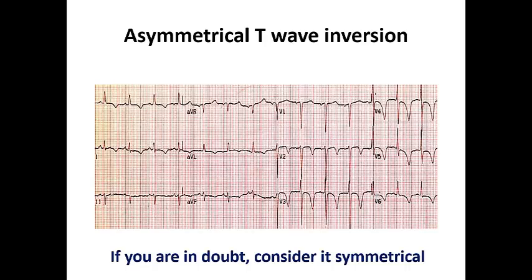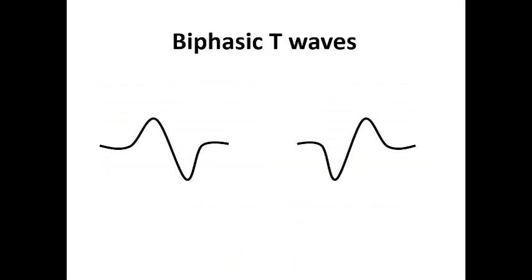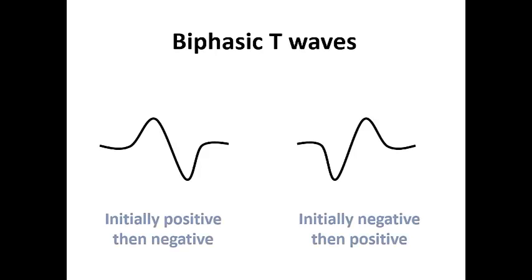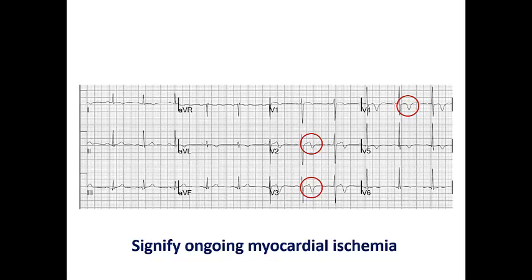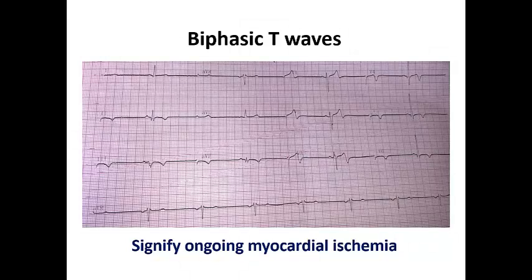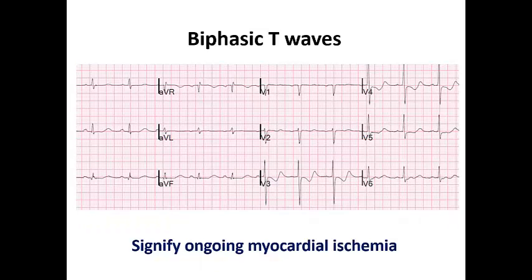The biphasic T-wave has two morphological variants: either starting positive then turning negative, or starting negative then turning positive — both are considered biphasic T-waves. In this ECG example the patient has biphasic T-waves in V2, V3, and V4, suggestive of ongoing myocardial ischemia in a patient presenting with chest pain. Biphasic T-waves are very important to recognize and are as clinically significant as symmetrical T-wave inversion.